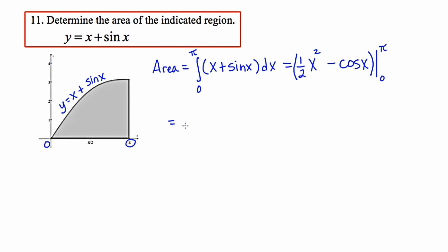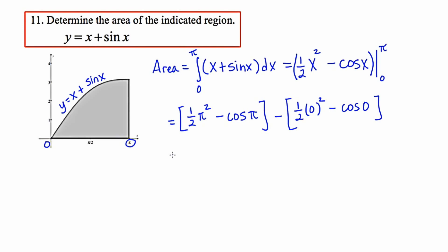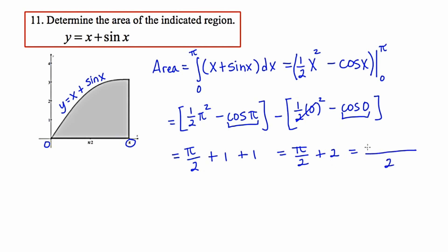Plugging in pi gives one half pi squared minus cosine pi. Plugging in 0 gives one half times 0 squared minus cosine 0. Cleaning this up: we have pi squared over 2. The cosine of pi is negative 1, but it's minus that, so it becomes plus 1. The cosine of 0 is 1, so that term becomes minus 1, but it's the opposite, making it plus 1. So we have pi squared over 2 plus 2, which as a single fraction is pi squared plus 4, all over 2. This represents the area under the curve, found by applying the first fundamental theorem of calculus.